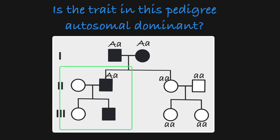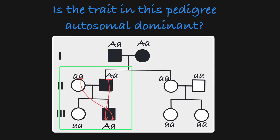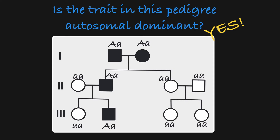Moving forward, we can see from this subfamily that both parents are unaffected and all of their children are unaffected, which again is what we would expect as they all must be homozygous recessive. And over here, we see an unaffected mother and an affected father producing an unaffected daughter and an affected son. That will all work out if this father is heterozygous, and the son is also heterozygous, receiving the father's dominant allele and the mother's recessive allele. So all in all, this pedigree could be representing a trait inherited in an autosomal dominant manner.